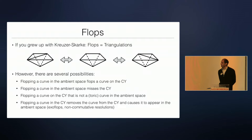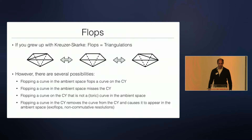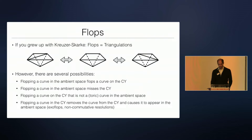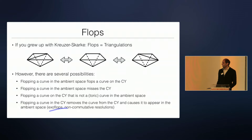Let's talk about the flops. You're probably all familiar with the standard example of a flop in toric geometry, where you have some triangulation and you flip it. But there are several other possibilities. For example, you can flop a curve in the ambient space that also leads to a flop of the curve in the Calabi-Yau — that's the standard way. But you can also flop curves in the ambient space that miss the Calabi-Yau, or flop a curve on the Calabi-Yau that's not a curve in the ambient space. You could even do more exotic things like exo-flops, but I will focus on the standard types.